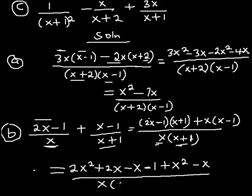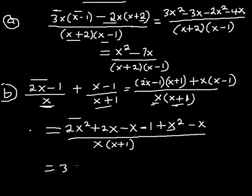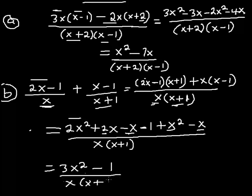Dividing by the denominator x(x + 1). Now I collect like terms: 2x² + x² gives 3x²; 2x − x gives x, and then x − x gives 0, so the x terms cancel. I'm left with just −1. So the final answer for part (b) is (3x² − 1) divided by x(x + 1).